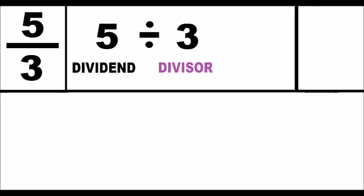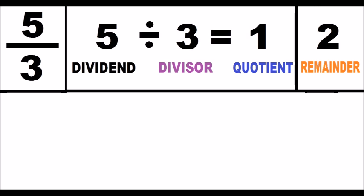Second step: the denominator 5 divided by the numerator 3. I get the quotient 1, and the remainder of the division is 2.